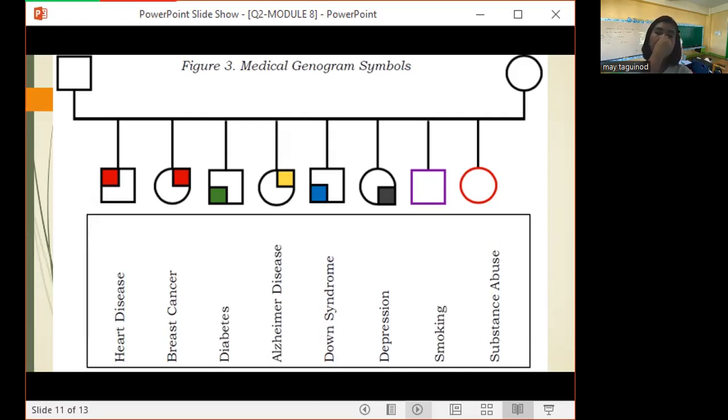And for smoking, we have a square with a violet line. Kulay violet po ang kulay ng square. Then for substance abuse, there is a colored circle.